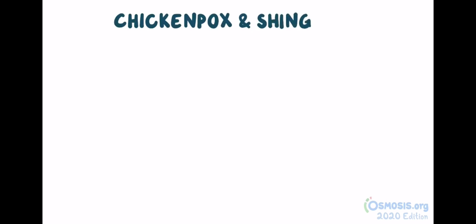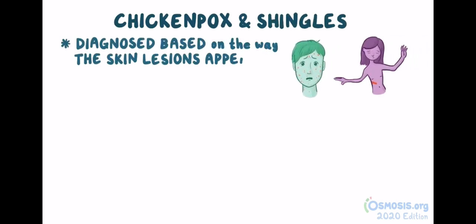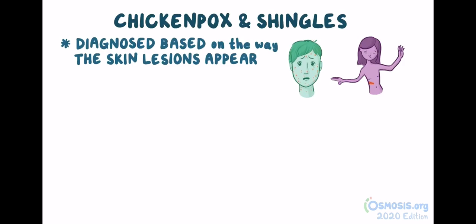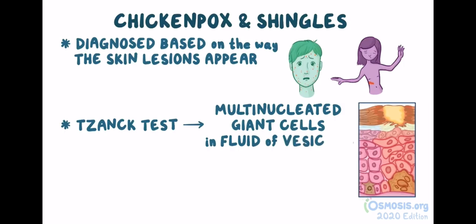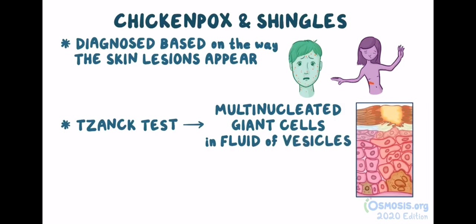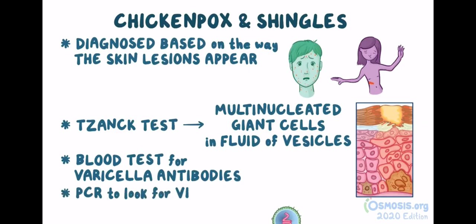Chickenpox and shingles are usually diagnosed based on the way that the skin lesions appear, but the diagnosis can be confirmed by using the Tzanck test to look for multinucleated giant cells in the fluid of the vesicles. More commonly, blood tests for varicella zoster antibodies or PCR can be done to look for viral DNA.